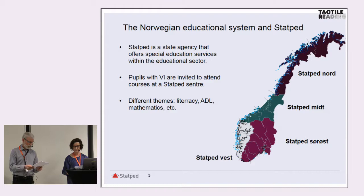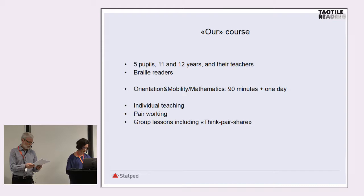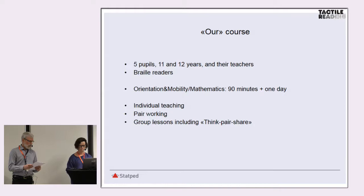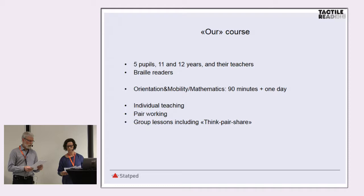The two other themes in our course were computer technology and physical education. Five pupils and their teachers took part in our course. All five pupils are Braille readers in grade six or seven. One pupil is blind, two have light perception, and two have some vision for orientation. We planned the activities to offer an increased level of difficulty using individual teaching, working in pairs and group lessons.